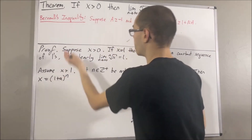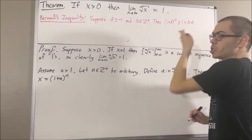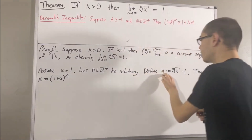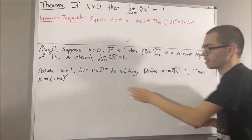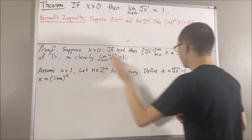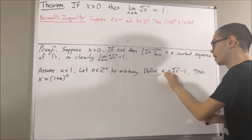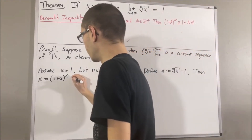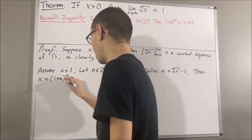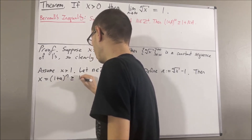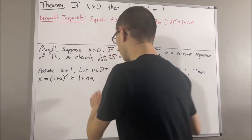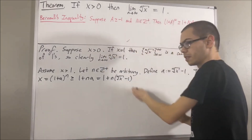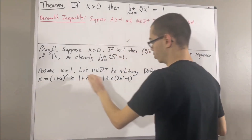Now we're going to apply Bernoulli's inequality. Certainly, we can apply Bernoulli's inequality here because a is greater than or equal to negative 1. In fact, since x is greater than 1, the n-th root of x is bigger than 1 as well, so a is positive. Applying Bernoulli's inequality, we have 1 plus a to the power of n is greater than or equal to 1 plus n times a. Then, we'll substitute a for what it is, and we have x is greater than or equal to this expression.